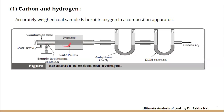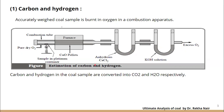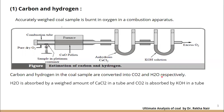This is the combustion tube. This is the furnace. Here we are sending the amount of oxygen required for combustion. Here we have a U-tube containing anhydrous calcium chloride, and here we have another U-tube containing KOH solution. The excess amount of oxygen not used during combustion will be removed from here. Carbon and hydrogen in the coal sample will be converted into carbon dioxide and water respectively — carbon reacts with oxygen to form CO2, and hydrogen reacts with oxygen to form water.